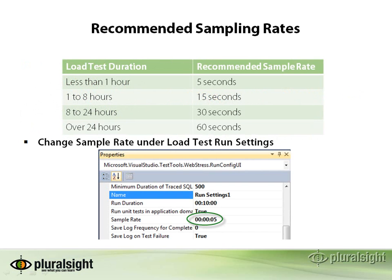If you're going to be running tests that run for a long time — like overnight or all weekend — you're going to want to crank down how frequently you're sampling the performance counters. Otherwise, you're going to end up with a huge amount of data and it can slow things down or choke up your SQL database. Here are some recommendations: if you're going for over 24 hours, you're probably okay to do once per minute, basically every 60 seconds.